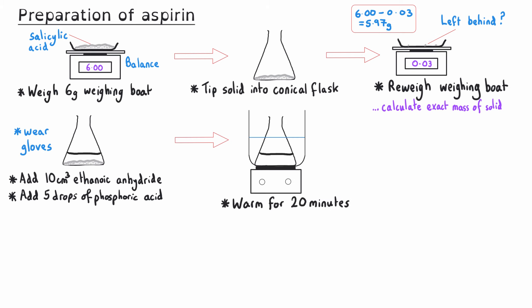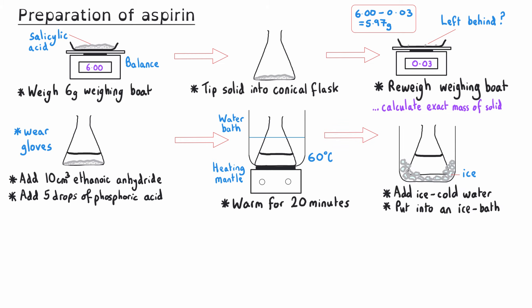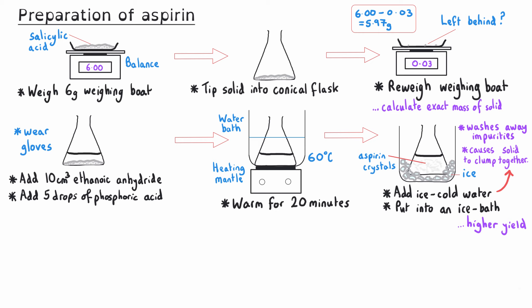The reaction itself is quite slow, so we need to warm it at about 60°C for around 20 minutes. We could put our conical flask into a water bath on a hot plate, or just use the hot plate directly. Hot plates are potentially a little easier to control the temperature, but it is important that we don't use any naked flames. After that time has passed, we add some ice-cold water to our reaction mixture, then put the mixture into an ice bath so the solid will crystallize and the aspirin will crash out of solution. Using ice ensures a higher yield and faster crystallization than allowing it to proceed at room temperature.